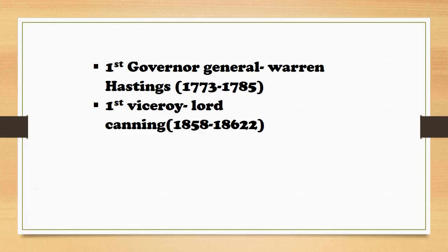The first Governor General was Warren Hastings — the first Governor General of Bengal. At this time, the presidencies of Madras and Bombay were made subordinate to Bengal. Warren Hastings helped the British East India Company with its expansion.